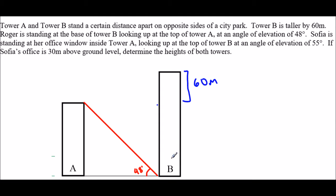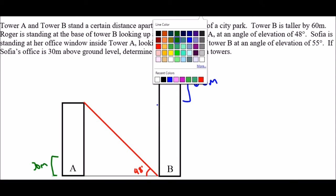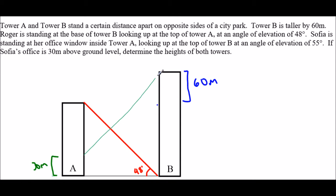Sophia is standing at her office window inside Tower A looking up to the top of Tower B at an angle of 55 degrees and her office is 30 meters above the ground. So let me just demonstrate. So here she's 30 meters above the ground and she is from her office looking up at the top of the other tower. So this is Sophia, she's 30 meters off the ground, she's inside Tower A and she's looking up to the top of Tower B and the angle of elevation is 55 degrees. So angle of elevation is always measured with reference to looking straight across and then turning your eyes upwards. From this we should be able to find the heights of both towers.